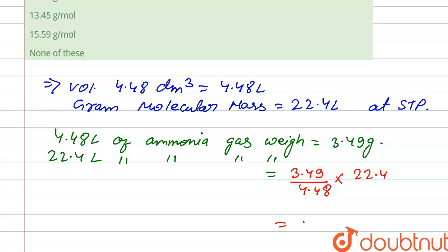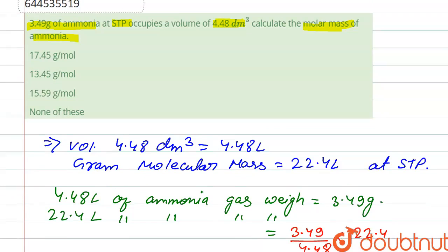So after solving we get 17.45 gram per mole. So this is the weight of ammonia, so our correct option is first.